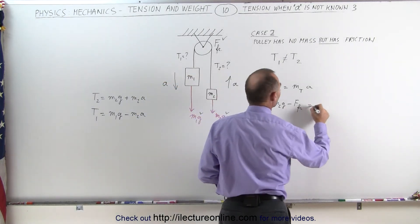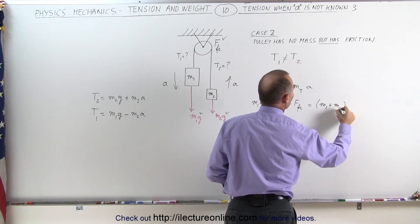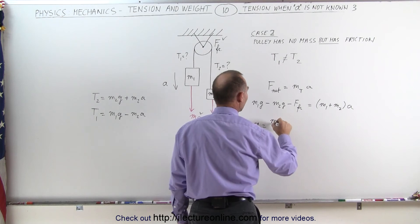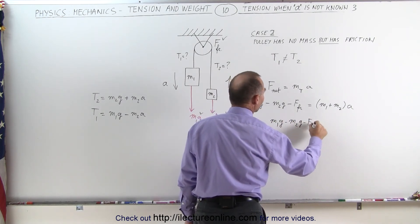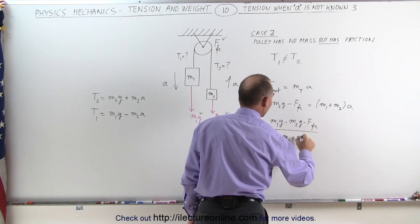They'll tell you that it's one newton or two newtons or something like that. And that will then equal the total mass, m1 plus m2, times acceleration, which means that the acceleration can be found by taking the left side, m1g minus m2g minus the friction force, and dividing it by the total mass, m1 plus m2.